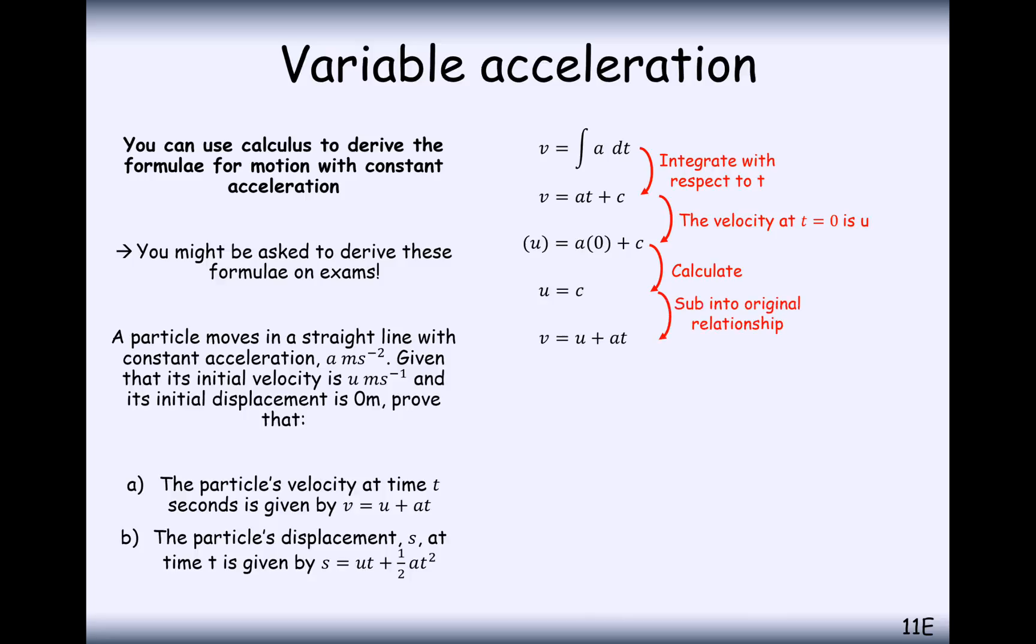So then substitute that into your original equation here. C is replaced with the letter U, so it's just now U plus A T. So there we are, V equals U plus A T has come straight from integrating acceleration and then substituting an initial condition to get that U part.